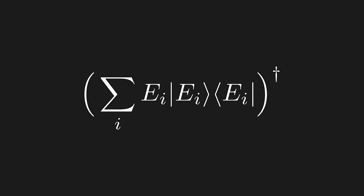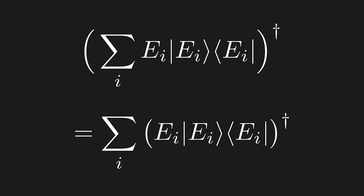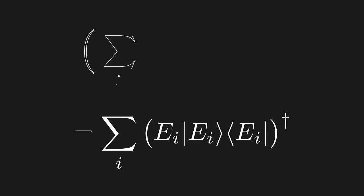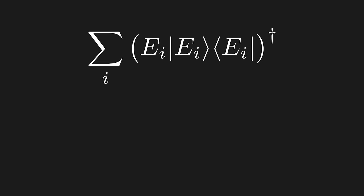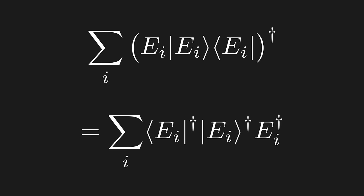First, let's use the property that the Hermitian adjoint of a sum is the sum of the Hermitian adjoints. Next, let's use our product rule for the Hermitian adjoint. We flip the order and then distribute the dagger.